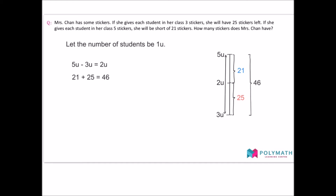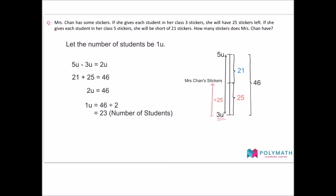Since we now know that two units are equal to 46, we can find the number of students as the number of students is one unit. We divide 46 by 2 to find one unit, which is also the number of students. We can then use the diagram to derive Mrs. Chan's number of stickers, as her stickers equal three units plus 25 stickers. Alternatively, we can also use five units minus 21 to get the answer of 94.